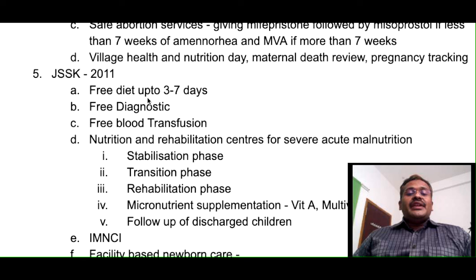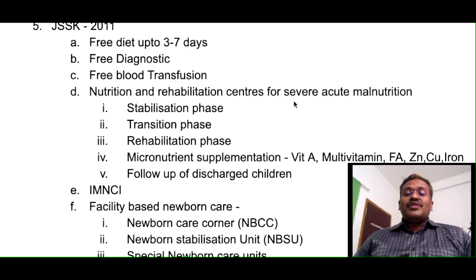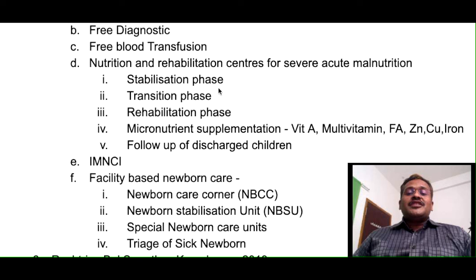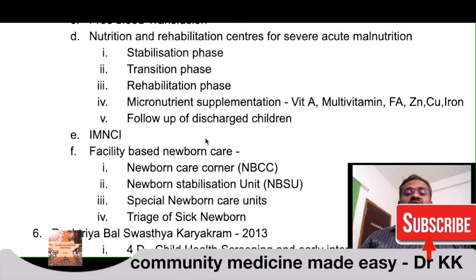Janani Shishu Suraksha Karyakram was introduced in 2011. Under this scheme, free diet was given up to 3–7 days after delivery, along with free diagnostic and blood transfusion facilities. Nutrition and Rehabilitation Centers for severe acute malnutrition were established. In these centers, babies with severe acute malnutrition are admitted in the stabilization phase (IV fluids), then the rehabilitation phase (oral fluids), and finally the rehabilitation phase with appropriate nutritional therapy — micronutrient supplementation including vitamin A, multivitamin, folic acid, zinc, copper, and iron — with follow-up of discharged children.